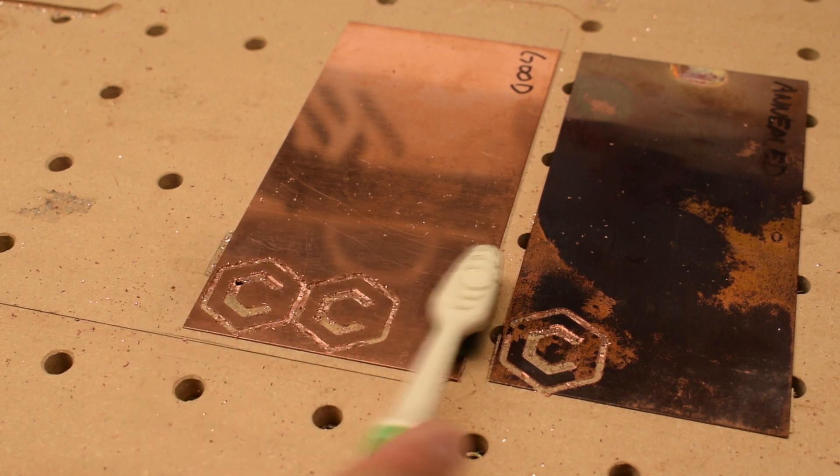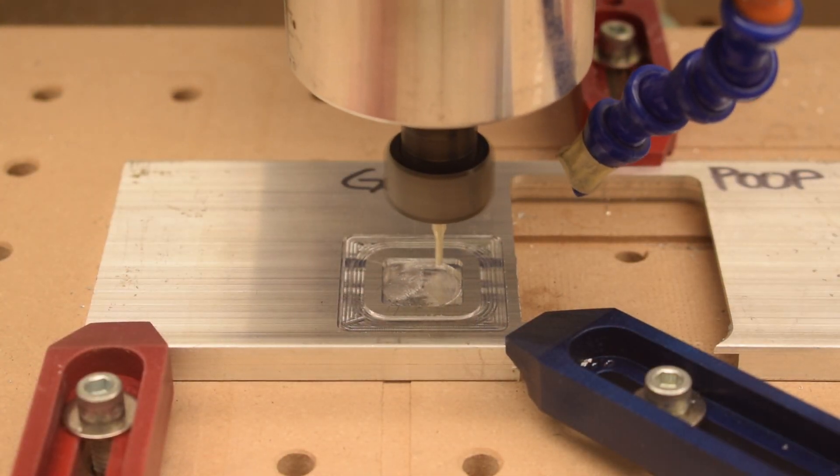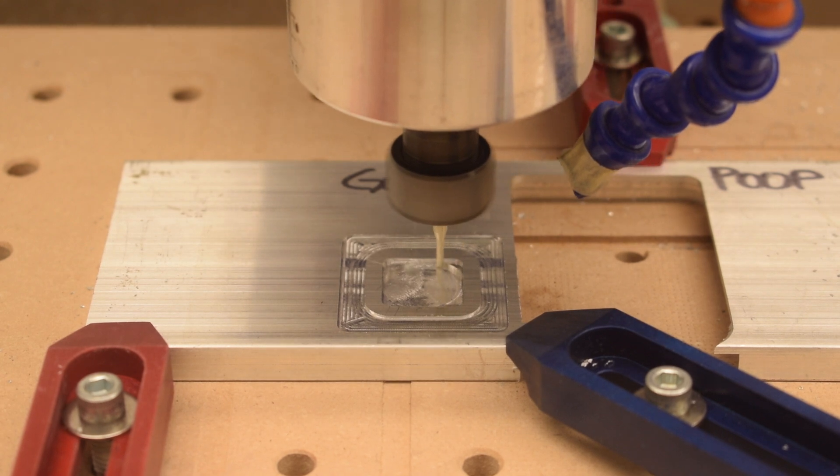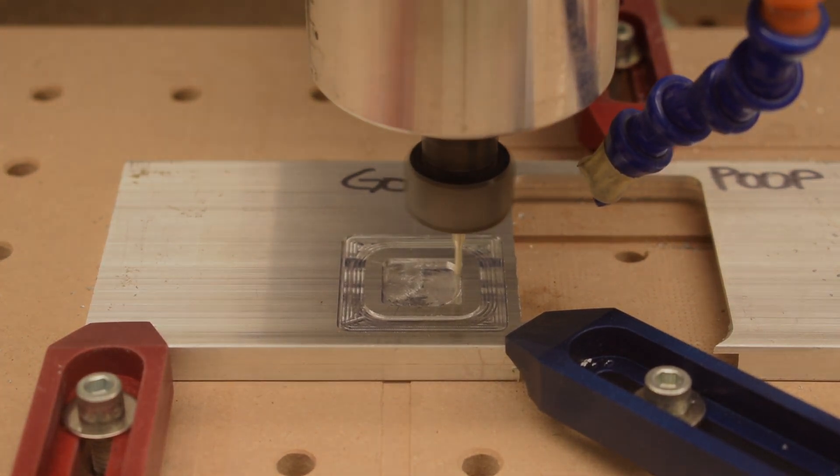So the next time your cuts in metal are coming out tattered and ugly, and you're scrambling for new speeds and feeds, or you're cursing your CNC, don't forget to check your material. Hope this sheds some light on why I'm so picky about my alloys and their tempers. Good luck and have fun machining folks.